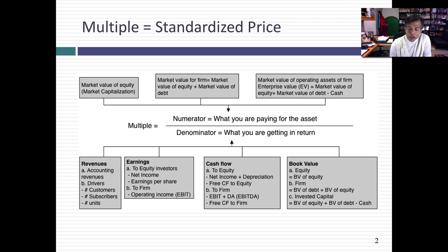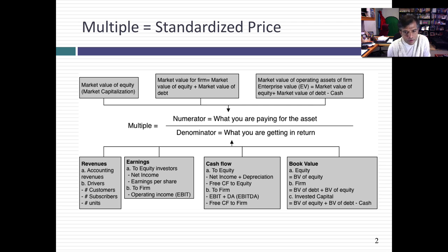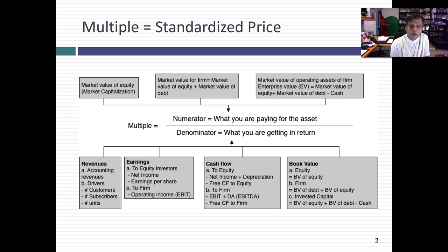In the numerator, you usually have a measure of market value. That measure can be the market value of just equity — that's market capitalization or price per share. It can be the market value for the entire firm, which would be market value of equity plus market value of debt. Or it can be the market value for the operating assets of the company, where you take market value of equity plus debt minus cash, effectively removing non-operating assets like cash or cross holdings in other companies.